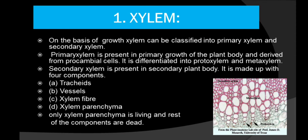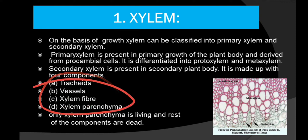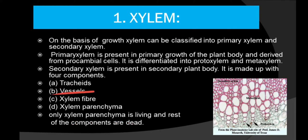Xylem is present in the secondary plant body and is made up of four components: tracheids, vessels, fibers, and parenchyma. Among these four, only the xylem parenchyma is living. Just remember that — only the xylem parenchyma is living, and the rest of the components — xylem tracheids, vessels, and fibers — are dead elements.